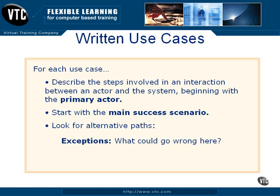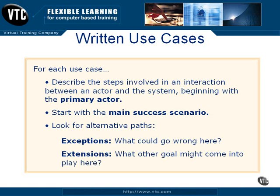The other kind of alternative path is called an extension. To find extensions, you ask: what other goal might come into play here? For example, some ATMs give you the option of printing a receipt. At a certain point along the main success scenario, the system might ask: do you want a receipt? You don't have to get a receipt to successfully complete the withdraw cash use case, but it's an option. So the print receipt use case would be an extension of the withdraw cash use case.